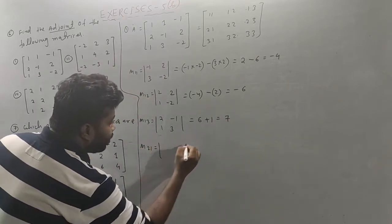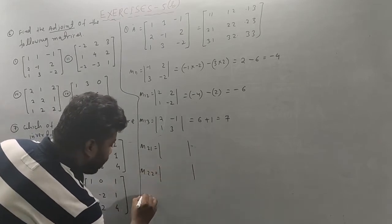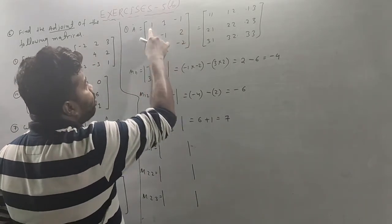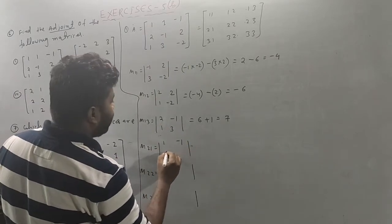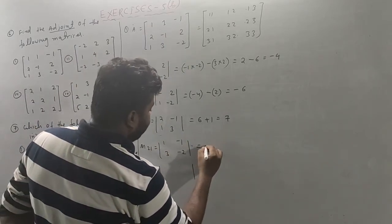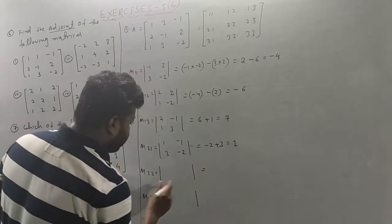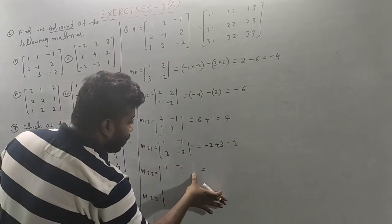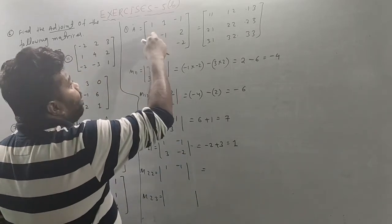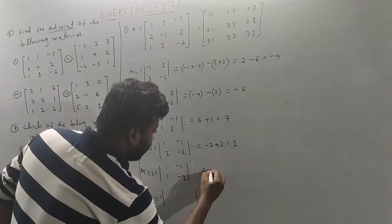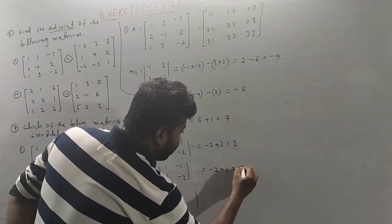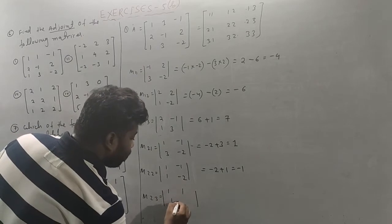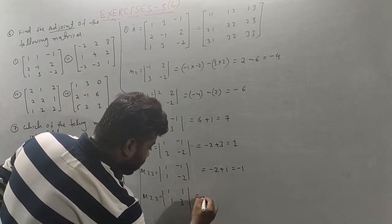M(2,1), M(2,2), M(2,1) again. For A(2): row 1-1, values 3, 2, minus 2, minus 1 plus 3 gives 1. Next M(2,2): A(2), elements 1-1, 1-1, 1-2. We get minus 2 plus 1, that is your minus 1. M(2,3): elements 1-1, 1-3. That gives 3 minus 1, so that is your 2.